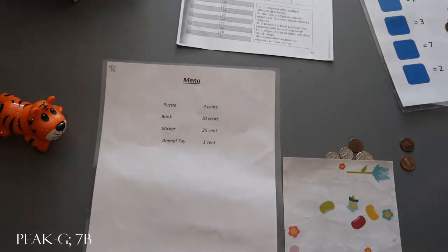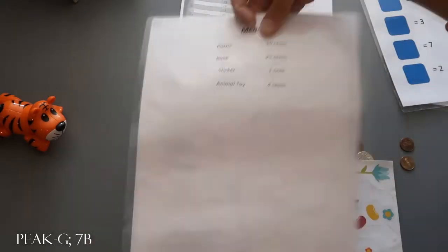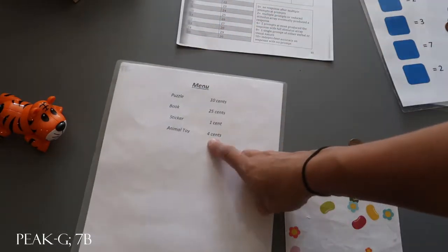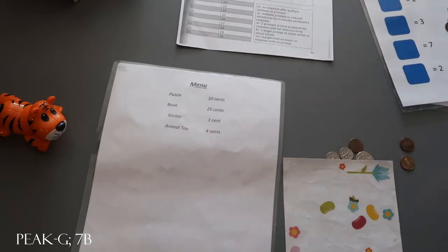So again, with generalization you're going to be intermixing train and test stimuli within one block. So for those train stimuli you're going to be prompting and reinforcing. If you're on this side and they give you 5 cents for the animal toy, you can work through that with them, help them get to 4 cents, prompt accordingly.